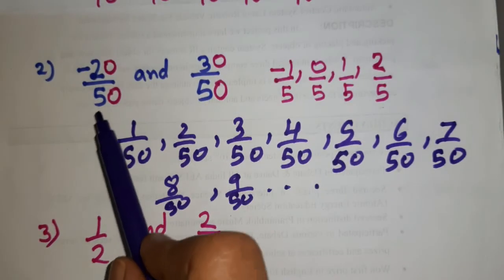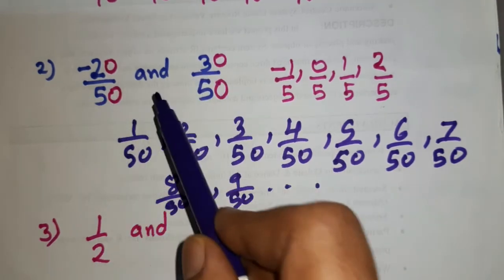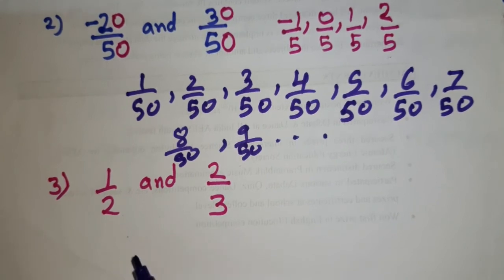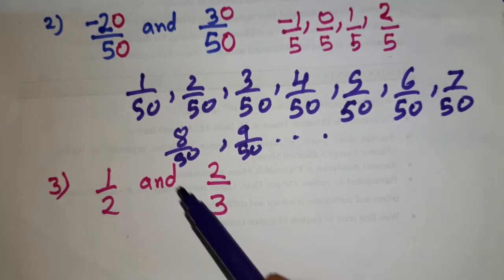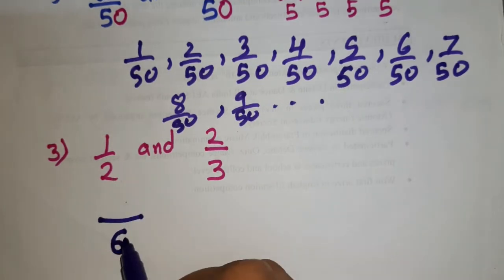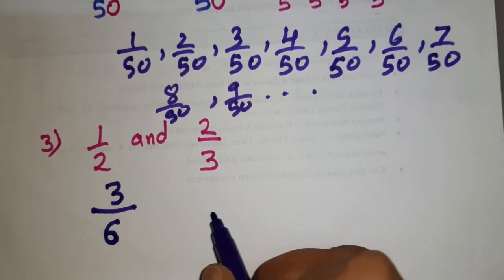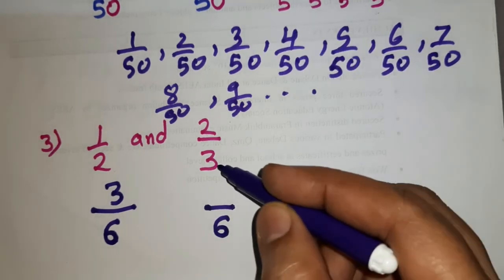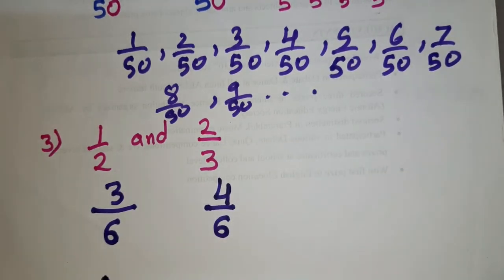Now the denominators are different. In the previous question both denominators were 5, so it was easy to multiply for equivalent fractions. When denominators are different, we need to find the LCM of the denominators. Since 2 and 3 are prime, their LCM is 6. We convert the rational numbers to equivalent fractions with denominator 6: 1 by 2 becomes 3 by 6, and 2 by 3 becomes 4 by 6.